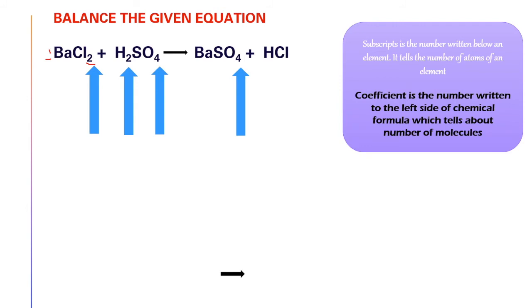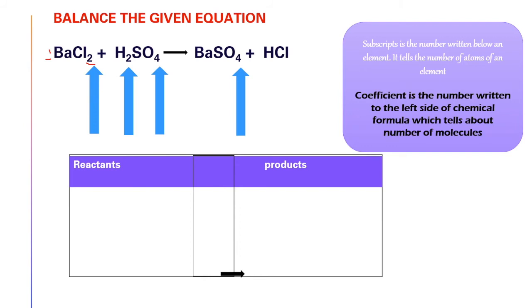Now for balancing the equation, let us draw the reactants and products. The chemical equation left-hand side is the reactant side and the right-hand side is the product side. Now let us write one by one the atoms of elements. Barium: the number of atoms in this equation is 1, for chlorine 2, for hydrogen 2, for sulfur 1, for oxygen 4. In the same order let us write it in the product side also.